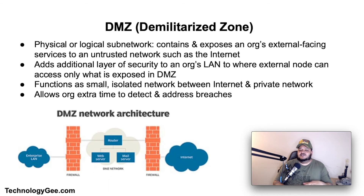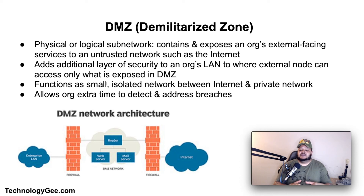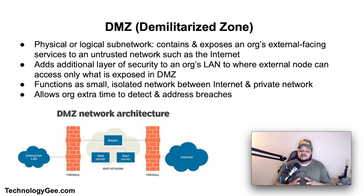A DMZ, or demilitarized zone, sometimes referred to as a perimeter network or screened subnet, is a physical or logical subnetwork that contains and exposes an organization's external-facing services to an untrusted, usually larger network such as the internet. The purpose of the DMZ is to add an additional layer of security to an organization's LAN, so that an external node can access only what is exposed in the DMZ while the rest of the organization's network is firewalled. The DMZ functions as a small isolated network positioned between the internet and a private network, and if its design is effective, it allows the organization extra time to detect and address breaches before they further penetrate into the internal networks.